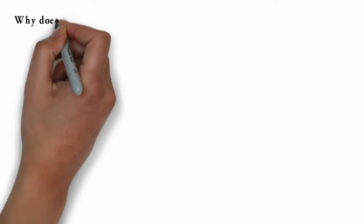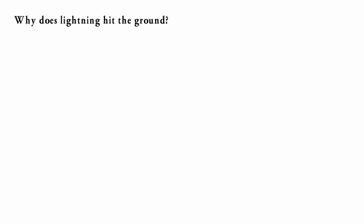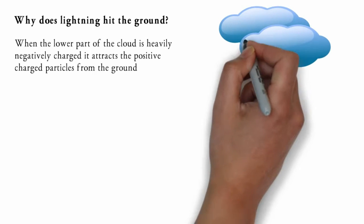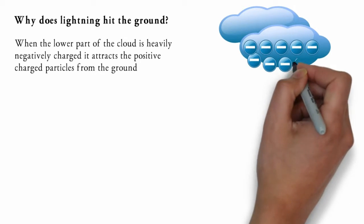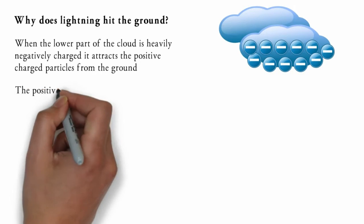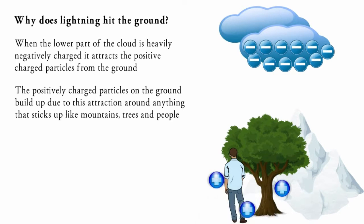Now let's analyze the lightning which hits the ground. Why does this lightning hit the ground? When the lower part of the cloud is heavily negatively charged, it attracts the positively charged particles from the ground. The positively charged particles on the ground build up due to this attraction around anything that sticks up,